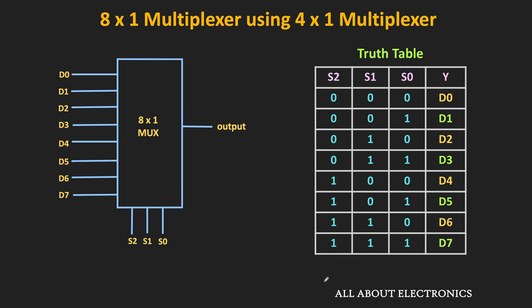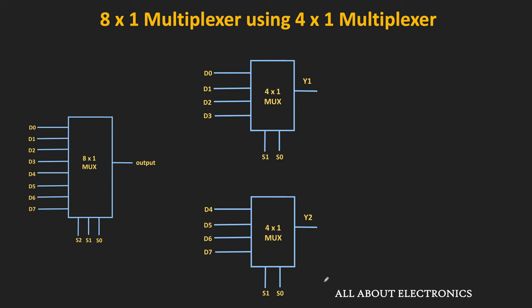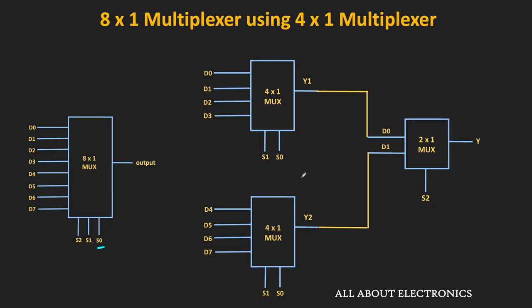For example, this 8-to-1 multiplexer can be designed using 4-to-1 multiplexers. Since the 4-to-1 MUX has 4 inputs, we require 2 such 4-to-1 MUXes to provide the 8 inputs. Each 4-to-1 MUX has 2 selection lines, so starting from the LSB, the first 2 selection lines S1 and S0 are connected to both multiplexers. To select any one of the outputs from these two multiplexers, we require one more MUX — a 2-to-1 MUX — with selection line S2 connected to it.